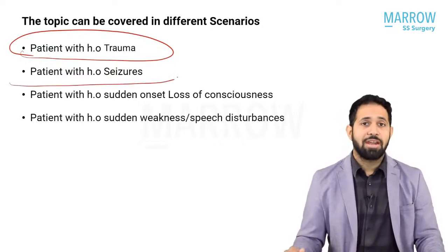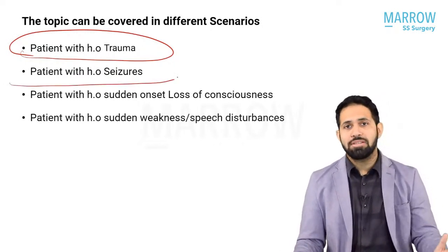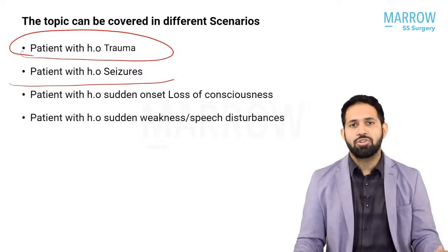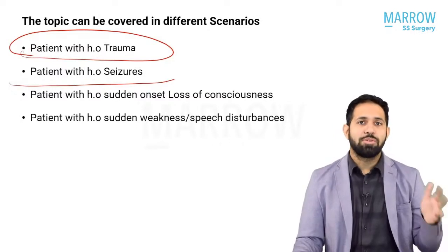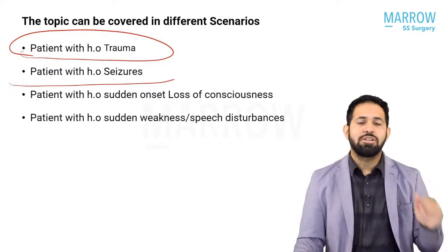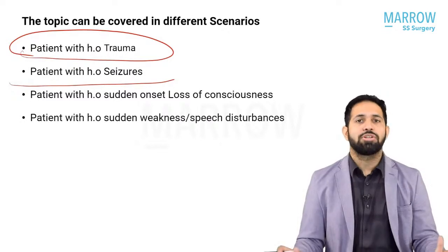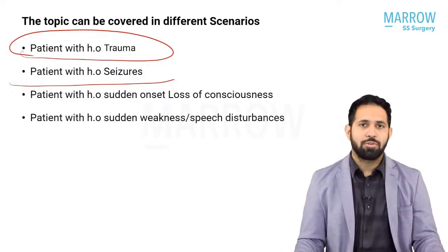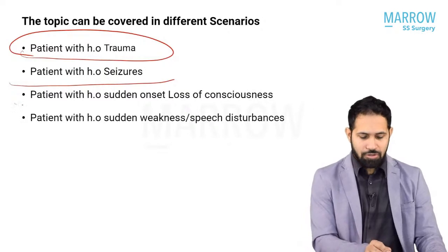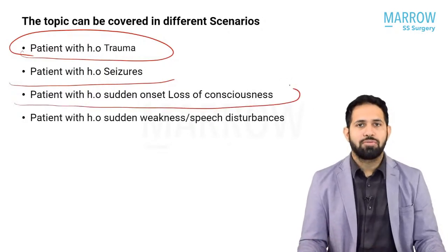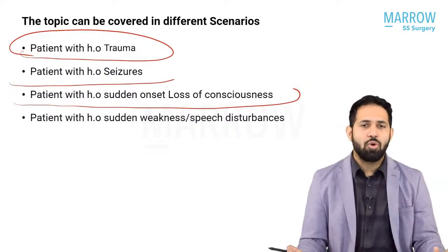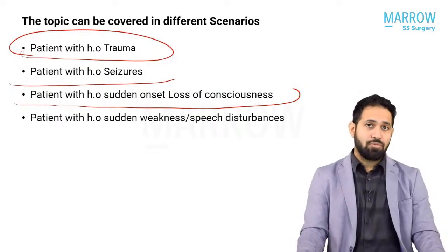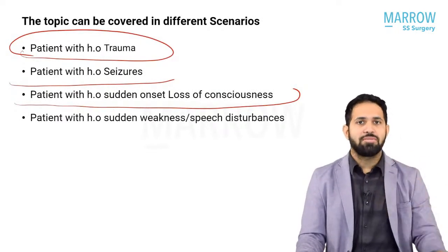The second type is a patient who has just had a seizure or might be seizing at the time you are called. A patient in the ward can also have a seizure and be shifted to the emergency or ICU — this might be a post-operative patient or someone you were managing conservatively. The third kind is a patient with a sudden history of loss of consciousness, found unconscious or having gone into altered sensorium spontaneously.